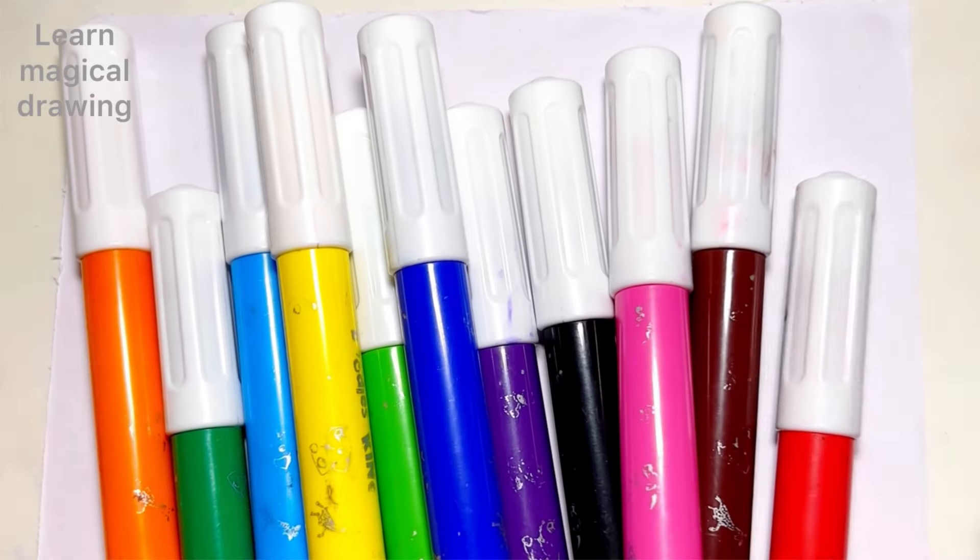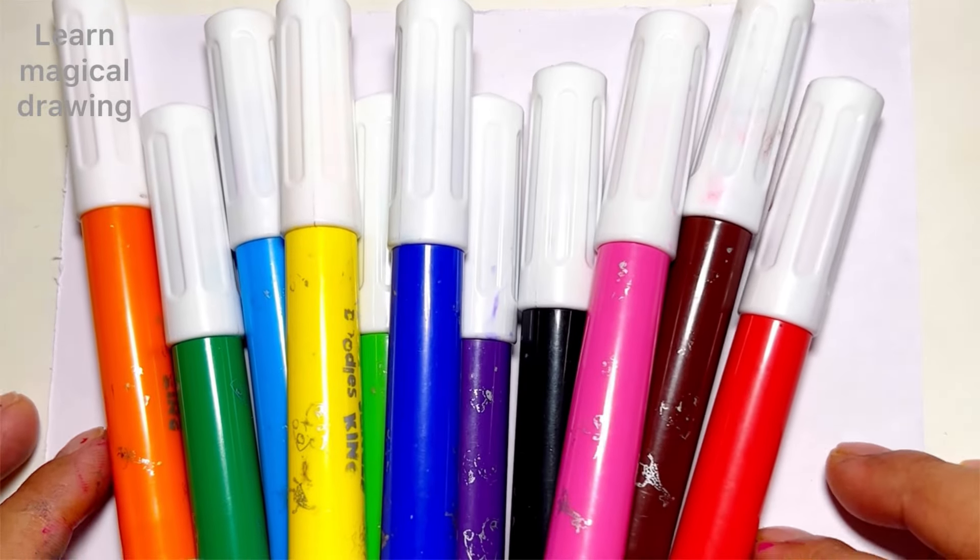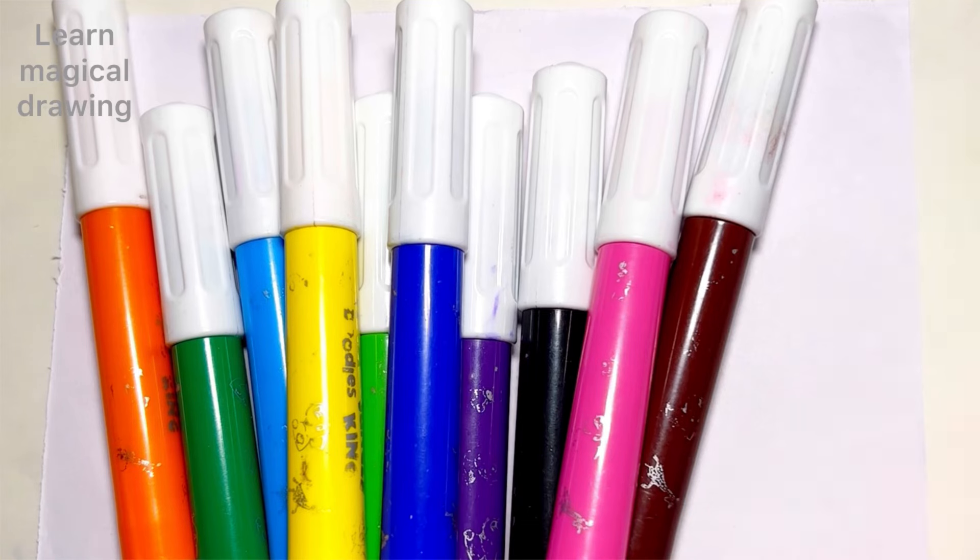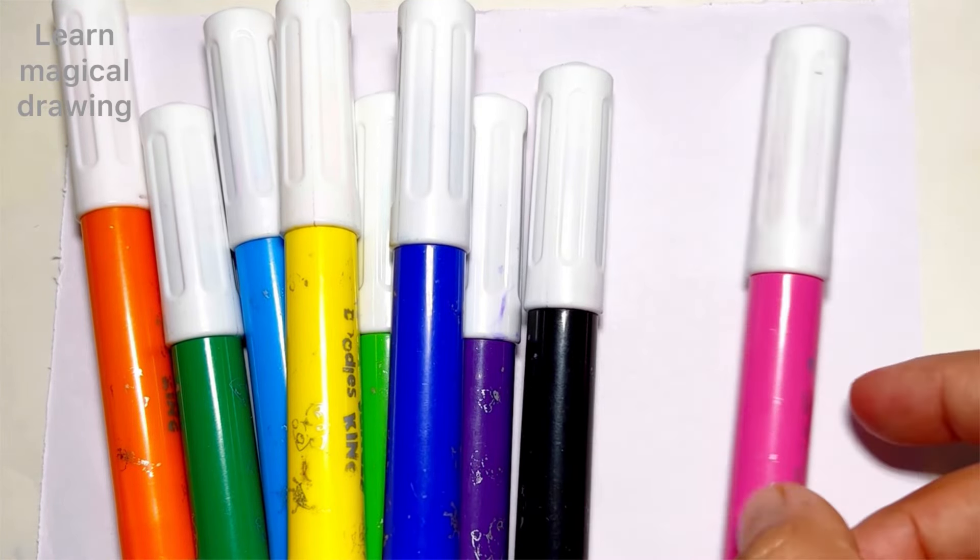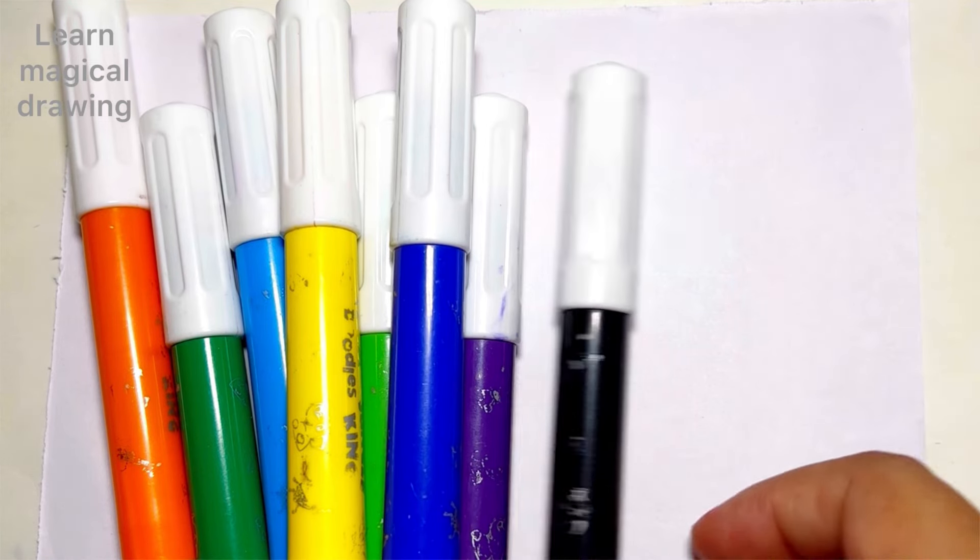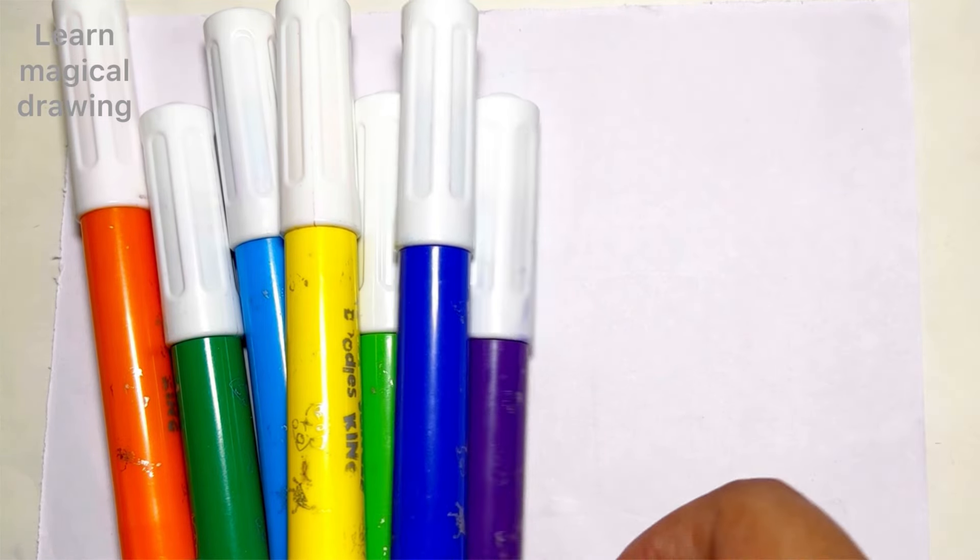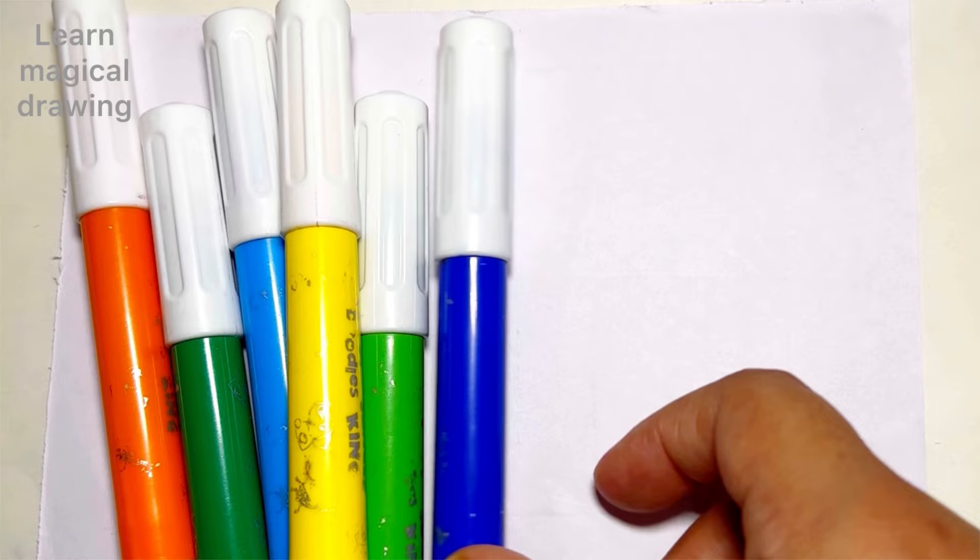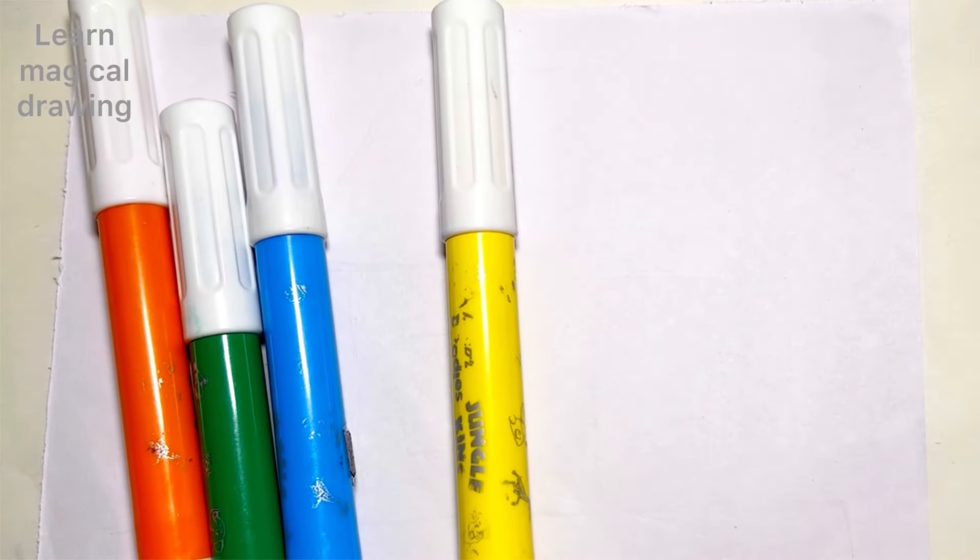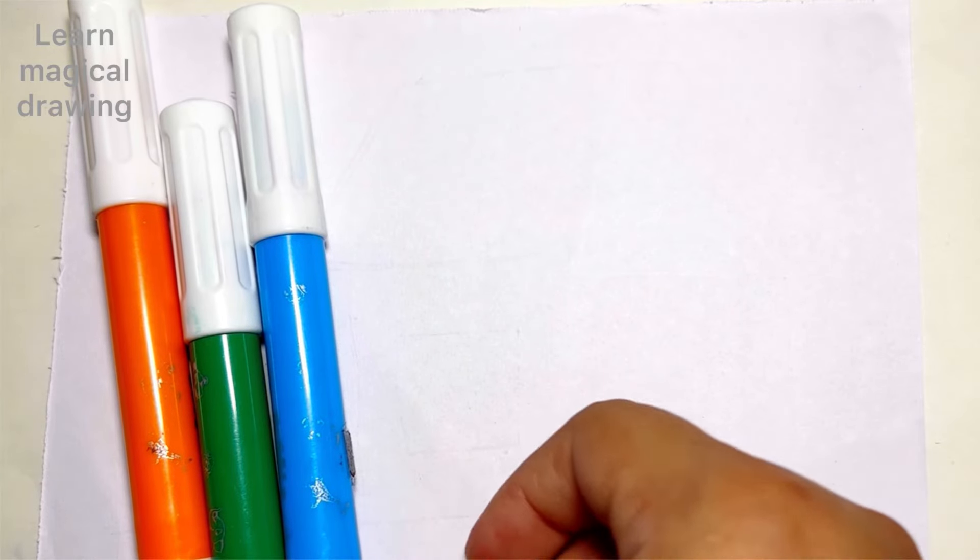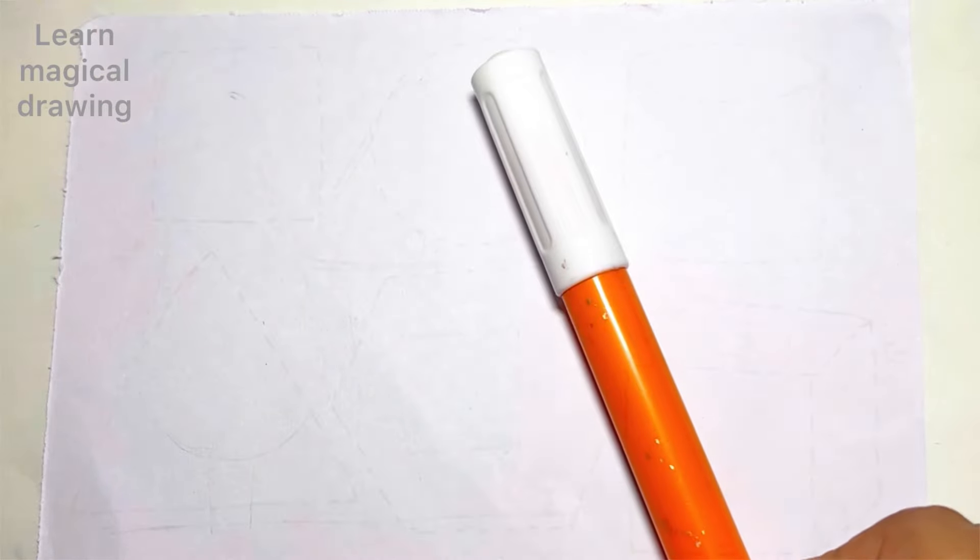Hello everyone, let's learn some colors. Red color, brown color, pink color, black color, purple color, blue color, green color, yellow color, sky blue color, dark green color, and orange color.